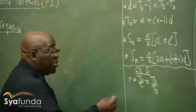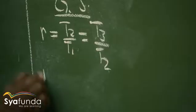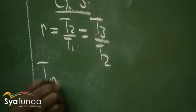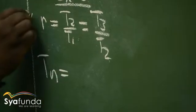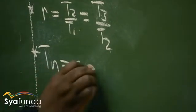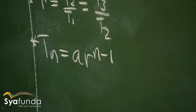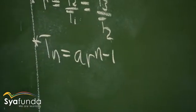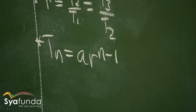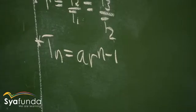However, the general term for the geometric sequence is T_n equals a times r to the power n minus 1. This is the general term for the geometric sequence.